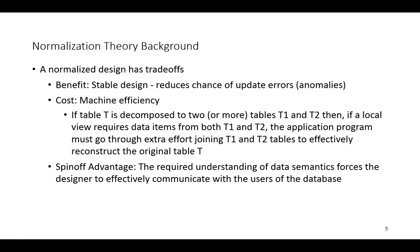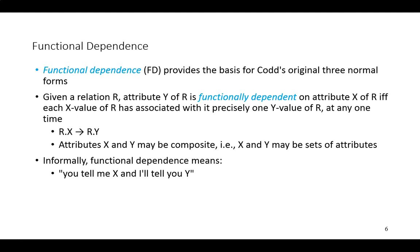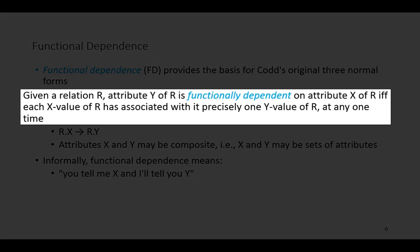So the notion of a stable design is effectively analogous to the notion of well-structuredness. Central to the notion of first, second, and third normal form is the concept of functional dependence. Given some relation r, the attribute y of r is said to be functionally dependent on another attribute x of the same relation r, if and only if each value of x has associated with it precisely one value of y at any point in time.